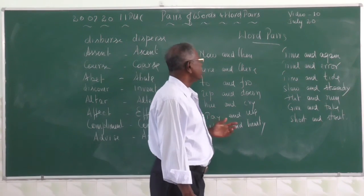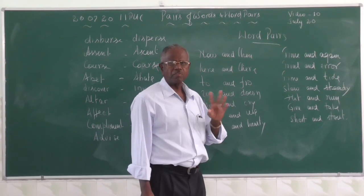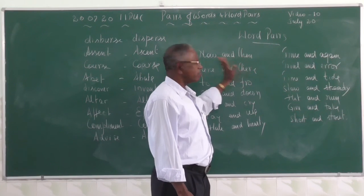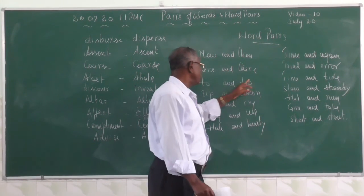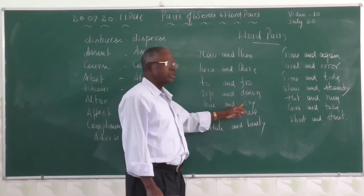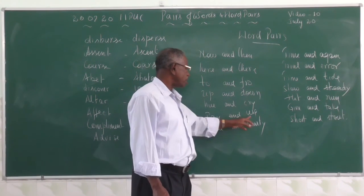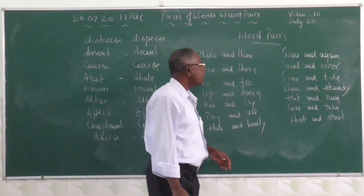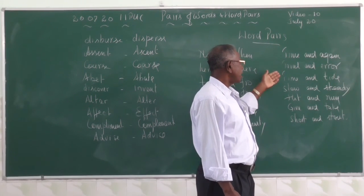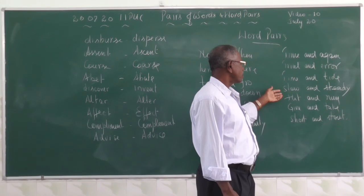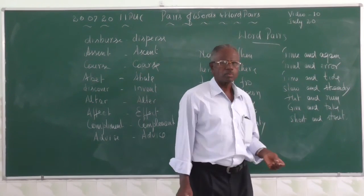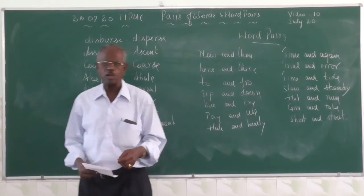Word pairs are natural combinations of words which cannot be reversed and they go together: now and then, here and there, to and fro, up and down, hue and cry, hale and hearty, time and again, slow and steady, hit and run, give and take. There are many more — try to find out some more and write them down.